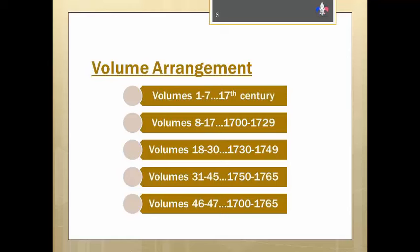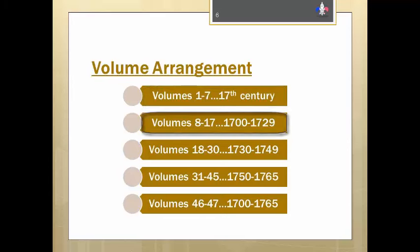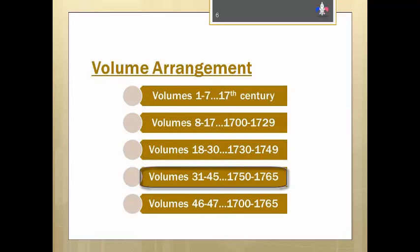The most formidable barrier to using these volumes is a lack of understanding of how they are arranged or grouped. Here are the date ranges in each of the five groupings of volumes. Anything from the 1600s will be found in volumes 1–7. Volumes 8–17 cover records from 1700 to 1729. Volumes 18–30 cover information from 1730 to 1749. Volumes 31–45 contain information from 1750 to 1765. And finally, the last two volumes, 46 and 47, cover records from 1700 to 1765 that were discovered after the publication of the earlier volumes.